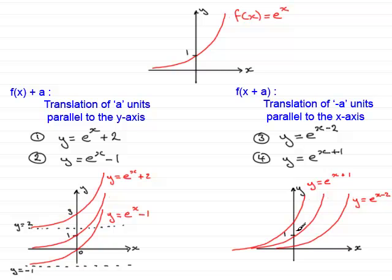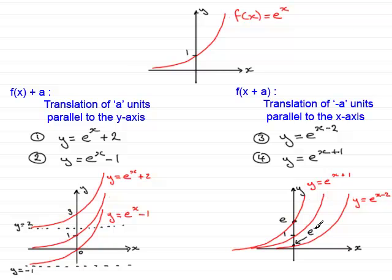We need to find where the graphs cross the y axis. For y equals e to the x plus 1, put x equals 0: you get e to the 0 plus 1, which is e to the power 1, or simply e. It's best to leave it as e because it's an exact value — using a calculator would give a horrible decimal. So y equals e to the x plus 1 intersects the y axis at e. For y equals e to the x minus 2, put x equals 0: you get e to the power 0 minus 2, which is e to the power minus 2. Just mark that point as e to the minus 2.